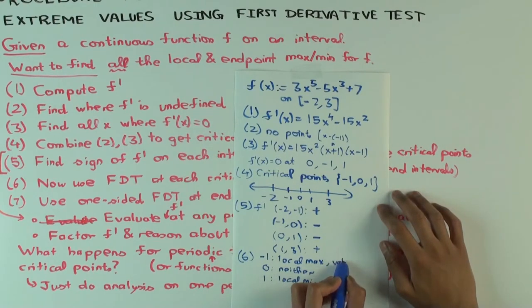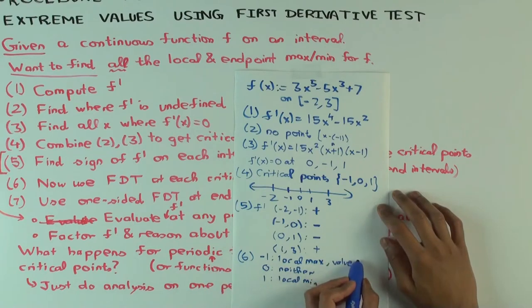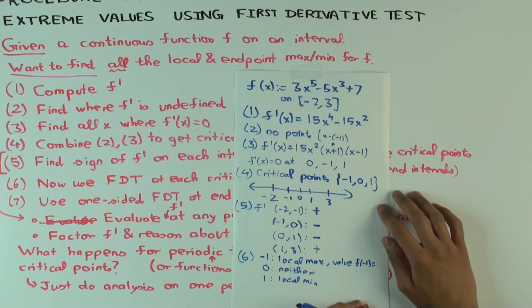Let's calculate the values also. If you have to find the values, you have to find the values. So what's the value of the local max at minus 1? You mean the value of f? That's negative 3 plus 5, which is 9. At 0 we don't have to bother because it's not a local maximum. And at 1, the local minimum, the value is 5. So you calculated these.